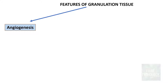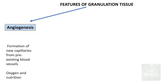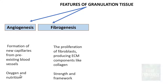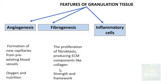The most important feature is angiogenesis, where there is formation of neocapillaries from the pre-existing blood vessels — these capillaries are formed to supply oxygen to the tissue. The second one is fibrogenesis, where there is proliferation of fibroblasts using extracellular matrix components like collagen, which provides strength and framework to the tissue being repaired. The third one is the presence of inflammatory cells, usually a mixed inflammation comprising lymphocytes, plasma cells, neutrophils, eosinophils, and macrophages — basically a part of the immune response.